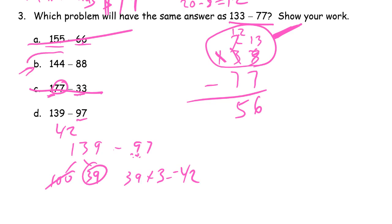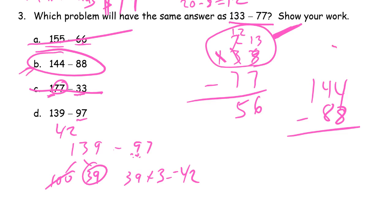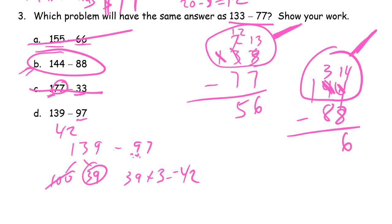Let's verify B: 144 minus 88. Four ones minus 8 ones — can't do it, so unbundle a ten. Three tens left, but 14 ones now. 14 minus 8 is 6. Three tens minus 8 tens — can't do that, so unbundle the hundred. Now we have 13 tens. 13 minus 8 is 5. Answer: 56. That confirms it's B — both give 56.